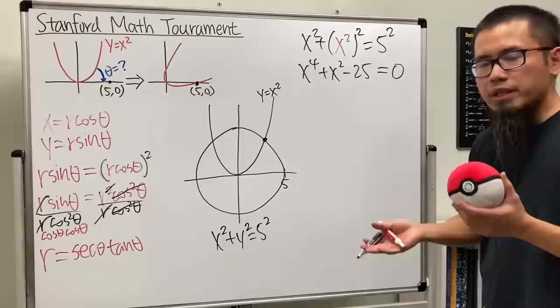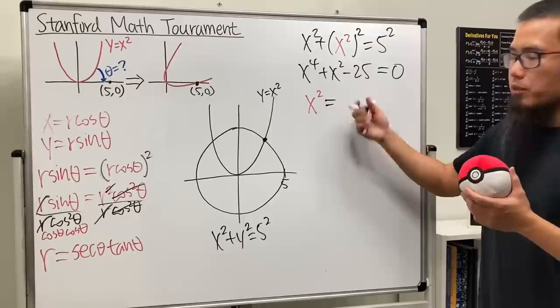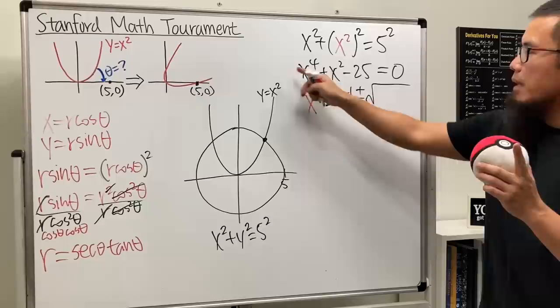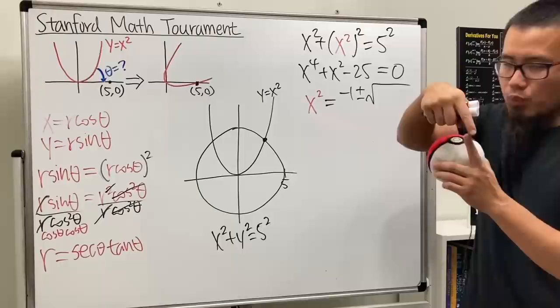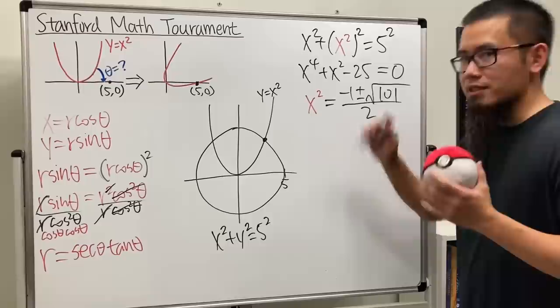Now we can just put this in here. We get x squared plus (x squared) squared equals 25. Of course this is x to the fourth power, and then we will have plus x to the second power moved to the other side, so that's minus 25. This is actually a quadratic equation in terms of x squared.